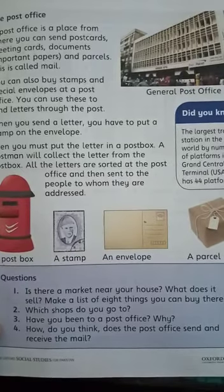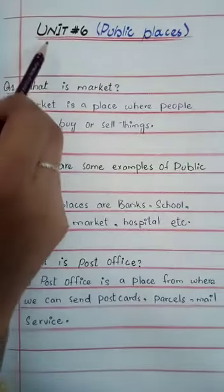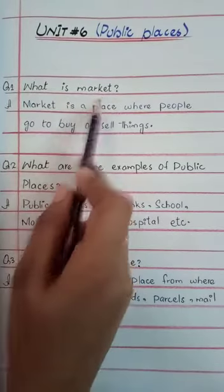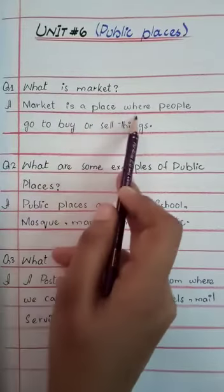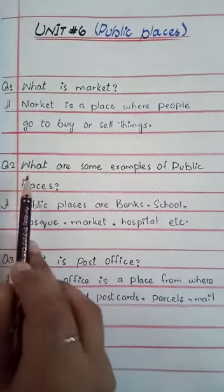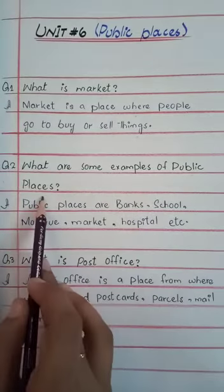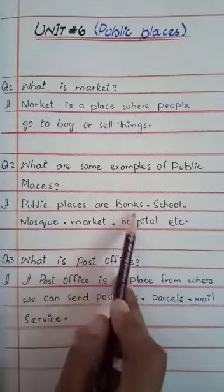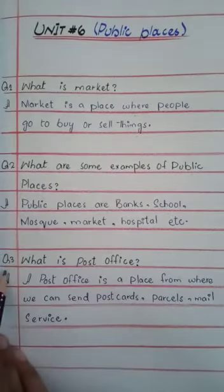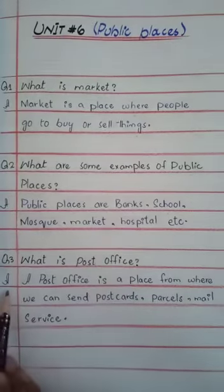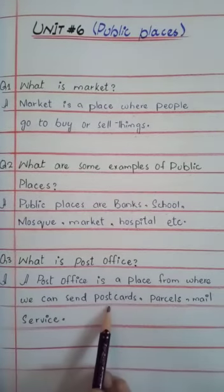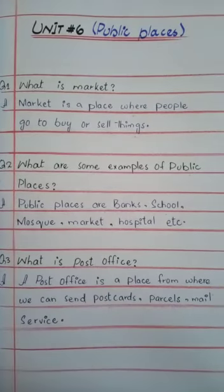Now take out your folder. First of all, put the heading: Unit Number 6, Public Places. Question number 1 is: what is a market? Answer: a market is a place where people go to buy or sell things. Question number 2 is: what are some examples of public places? Answer: public places are banks, school, mosque, market, hospital, etc. Question number 3 is: what is a post office? Answer: a post office is a place from where we can send postcards, parcels, and mail service.